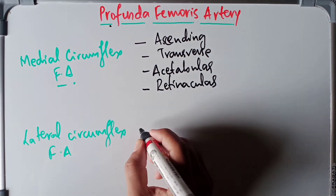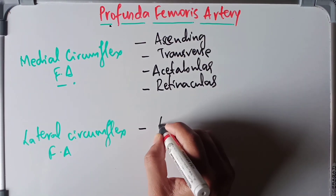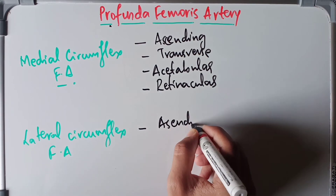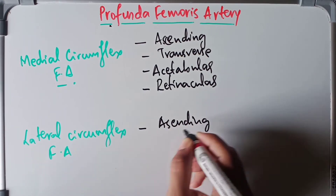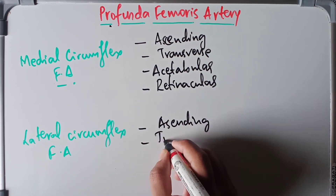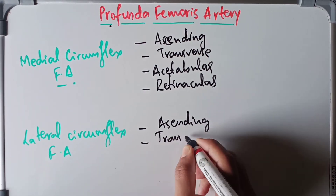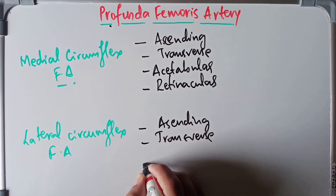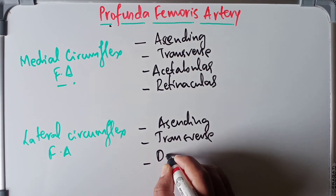From the lateral circumflex femoral artery, we have an ascending branch, a transverse branch, and a descending branch.